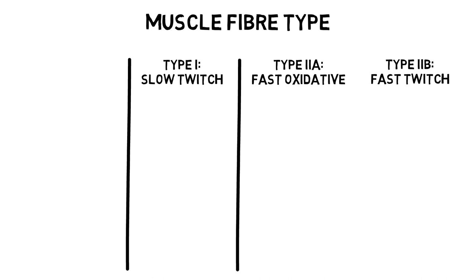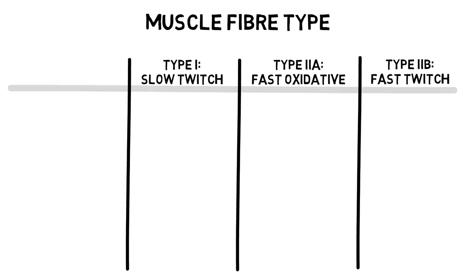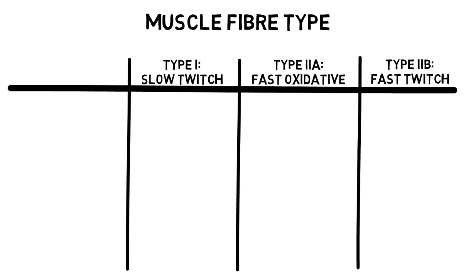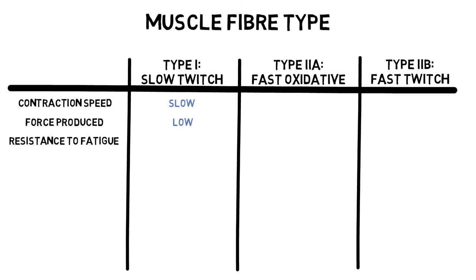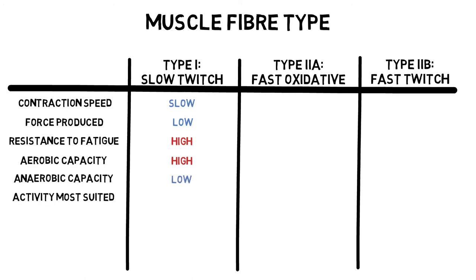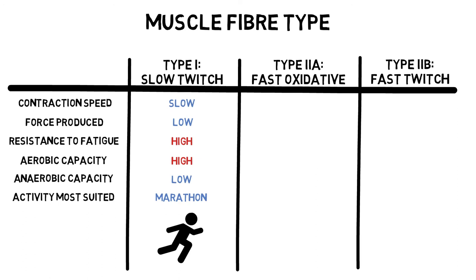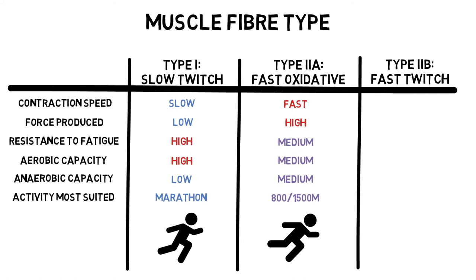When defining the characteristics of these fibres, it is useful to remember that Type 1 and Type 2b will always be at the opposite ends of the spectrum. Type 1 fibres are slow and do not produce much power, but their high resistance to fatigue and aerobic capacity makes them perfect for endurance activities such as the marathon. Type 2a are the perfect middle ground between slow and fast, making them great for middle distance activities that require elements of both endurance and power, such as 800 metres or 1500 metres.